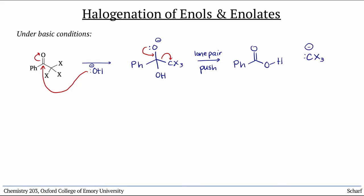So we make a carboxylic acid, which has a pKa of about 5, pretty acidic. The CX3 minus anion is plenty strong enough as a base to deprotonate this, and we're left with a carboxylate and HCX3.